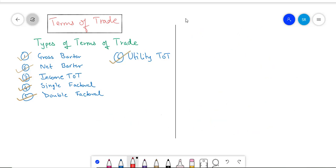Last but not the least, we have the utility terms of trade. At the end of the day, it is the utility from the imports that we do which matters a lot. The utility terms of trade is given as the net barter terms of trade multiplied by the ratio of productivity indexes.